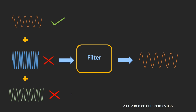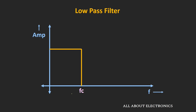The first is the low-pass filter. This low-pass filter passes low-frequency signals starting from 0 Hz up to the cutoff frequency fc. Beyond this cutoff frequency, it rejects all other frequency components. If you see the frequency spectrum of the ideal low-pass filter, it will look like this.